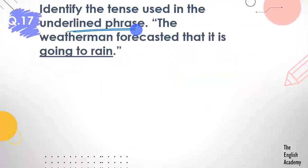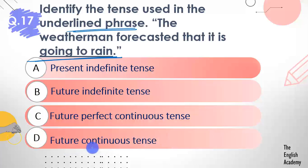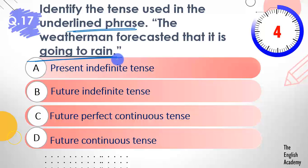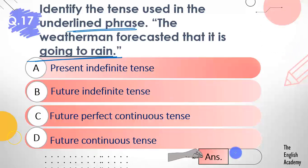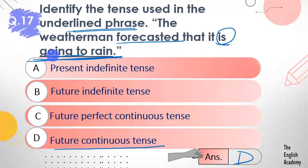Question number 17: Identify the tense used in the underlined phrase — The weatherman forecasted that it is going to rain. 'Going to rain' is underlined. Options: A) present indefinite tense, B) future indefinite tense, C) future perfect continuous tense, D) future continuous tense. The answer is option D — future continuous tense. 'Going' is the present participle form of 'go', which shows continuity, and the action will happen in the future. That is why this is future continuous tense.